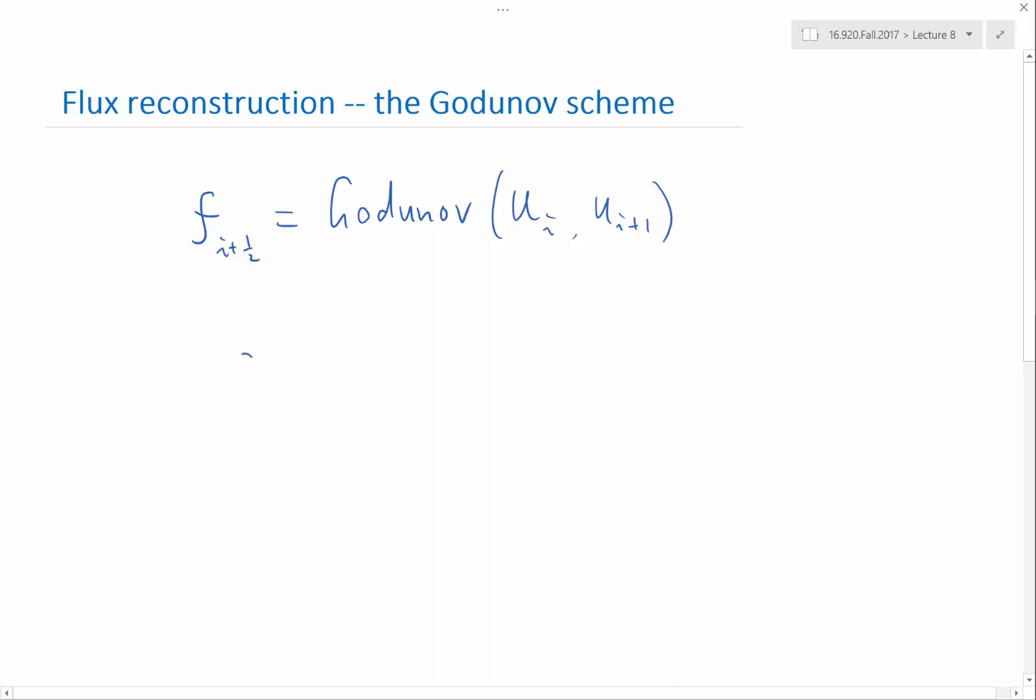So the Godunov function of uL and uR is defined exactly as the maximum of f u in the interval uL to uR if uL is less than uR.